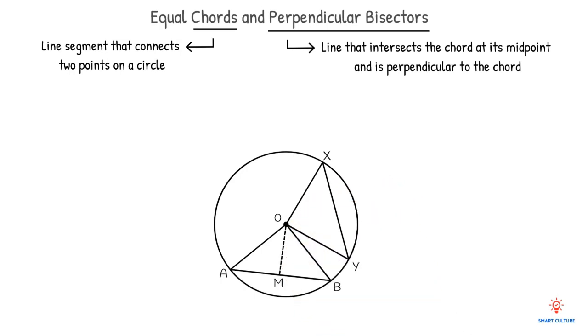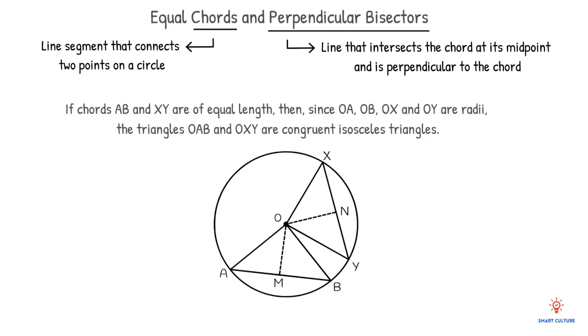which are lines MO and NO respectively. If chords AB and XY are of equal length, then since OA, OB, OX and OY are radii,